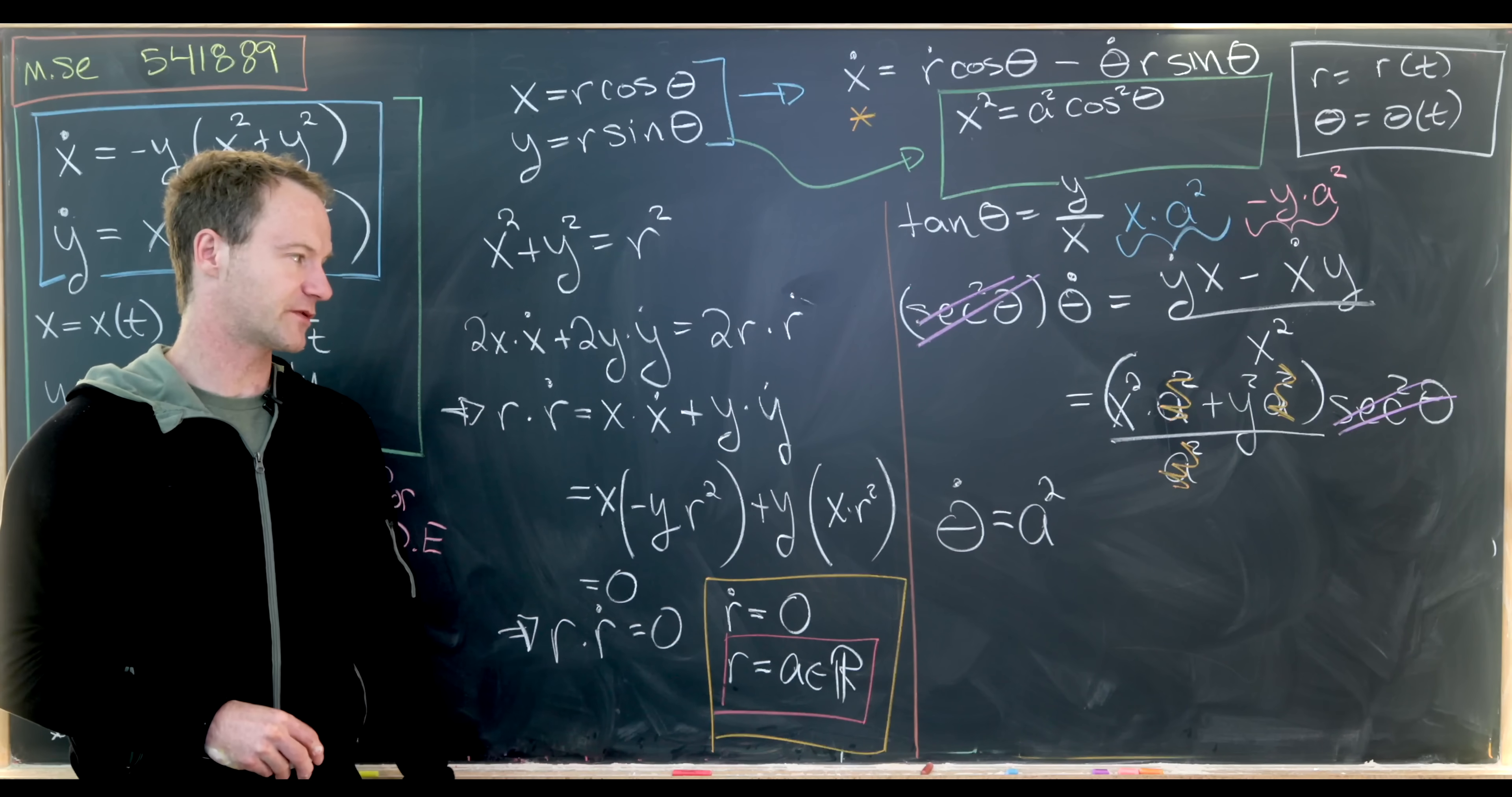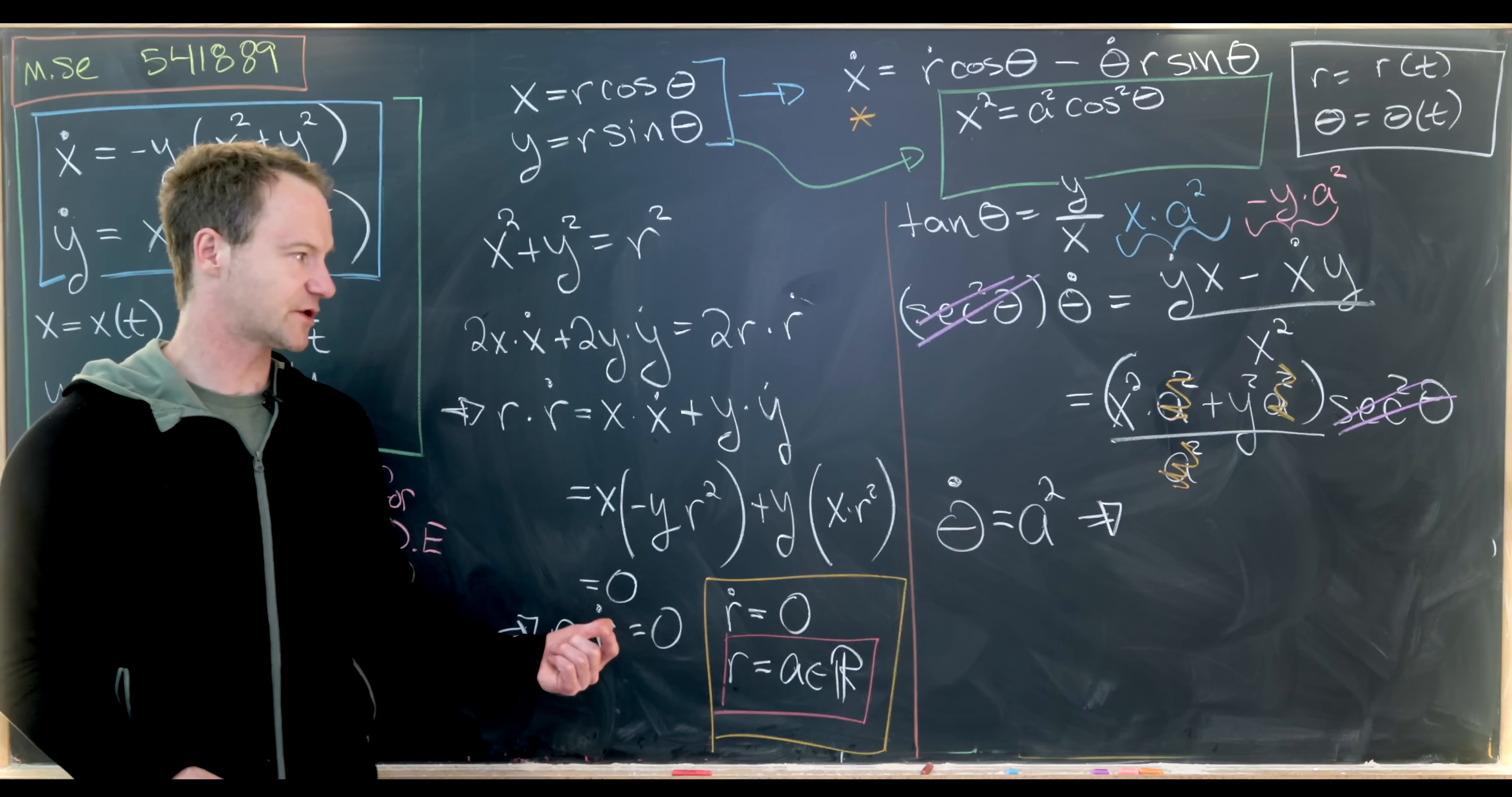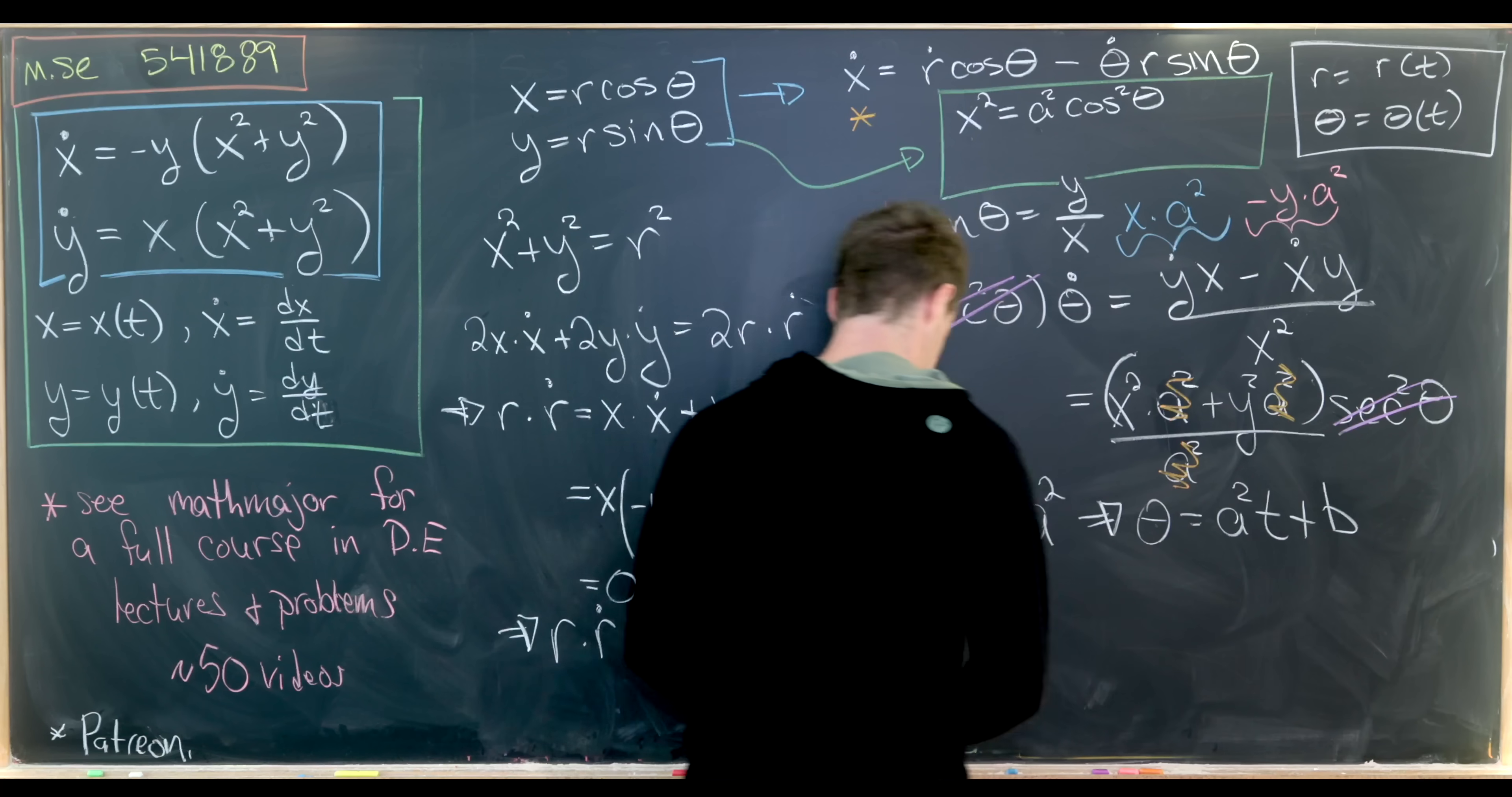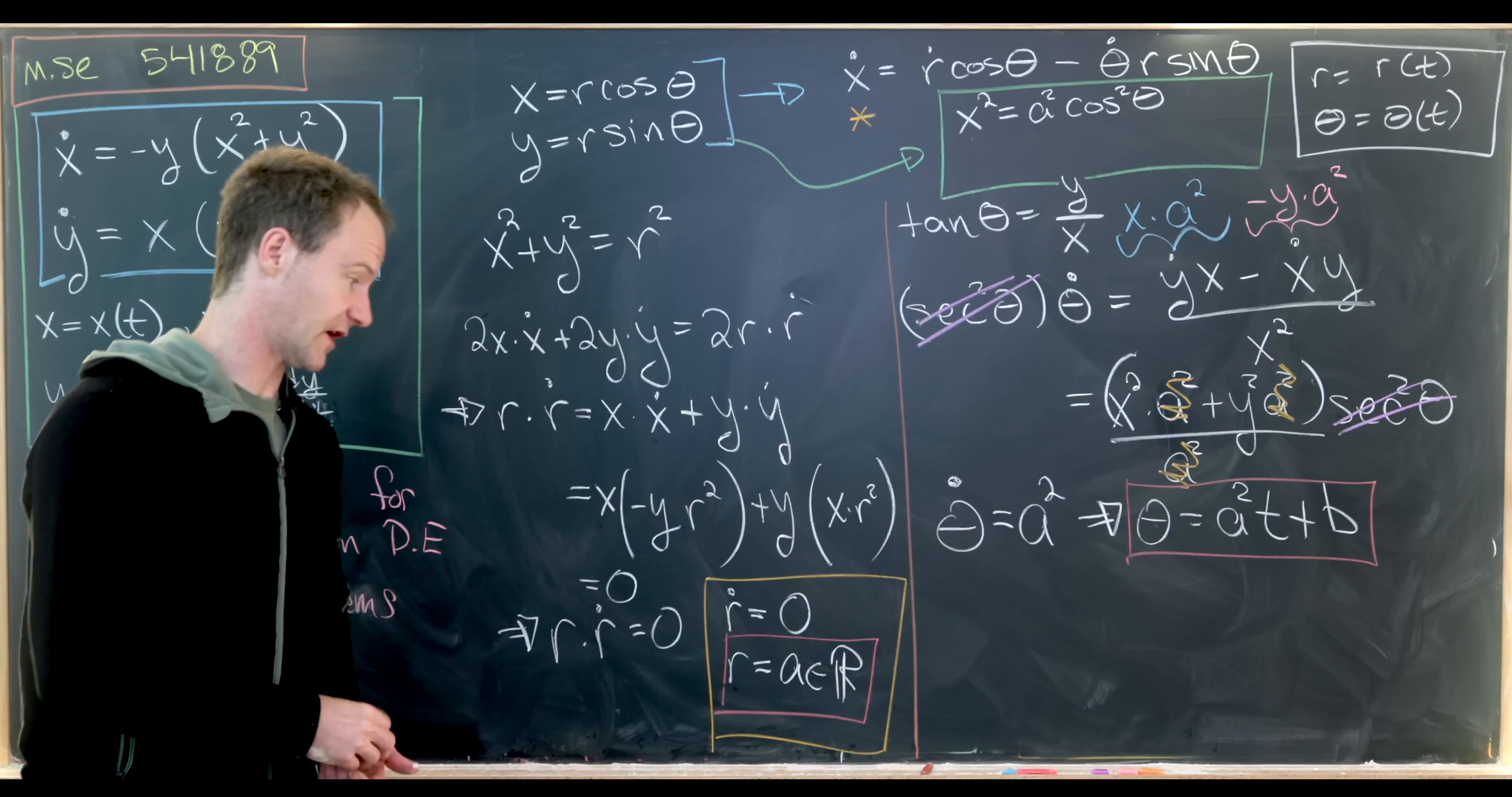So we have θ dot. In other words, the derivative of θ with respect to t is a constant a squared. But if that's a constant a squared, then we know θ is equal to a squared times t plus b, where b is some other constant. And that's just by taking the antiderivative of both sides.